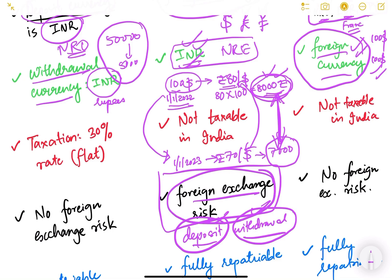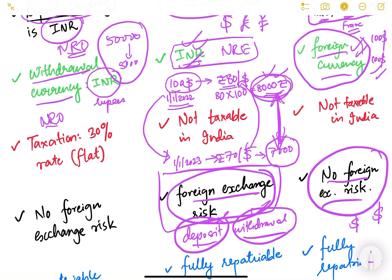There is no foreign exchange risk in the FCNR account because if you deposited in dollars, you can withdraw in dollars. It doesn't matter what the exchange rate is — you deposited 100 dollars and you get 100 dollars back.